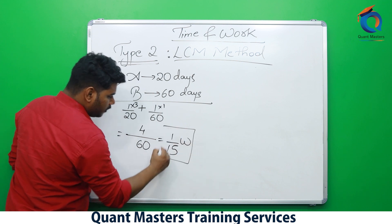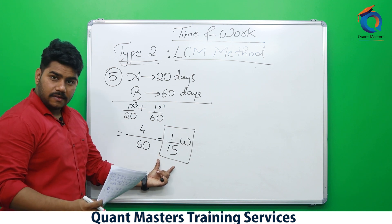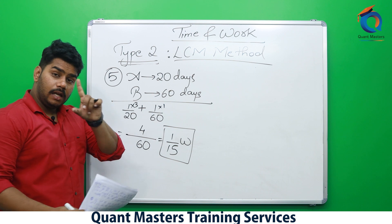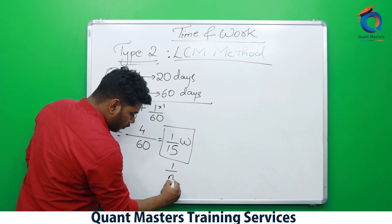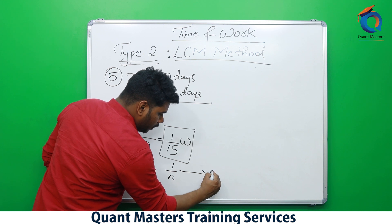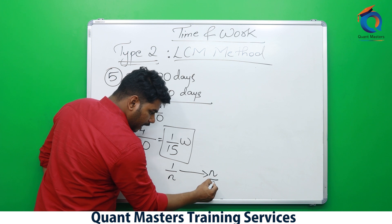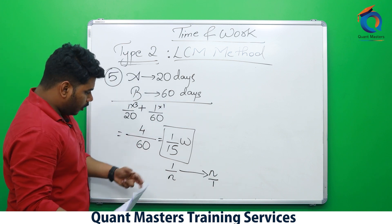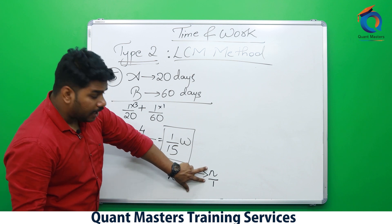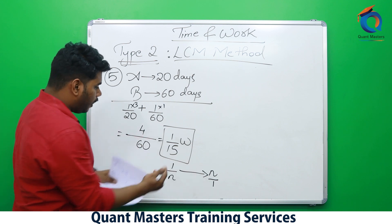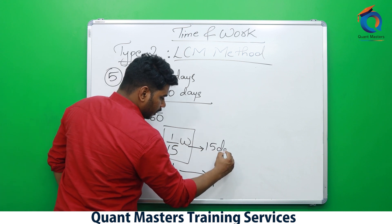This 1/15 is nothing but the work done by A and B in one day. Now understand the concept: if in one day I do 1/n of the work, I will complete the work in n days. Same way, in one day if they are doing 1/15th of the work, they will complete the work in 15 days.